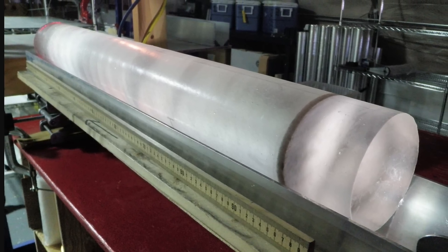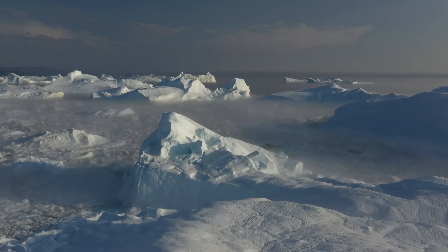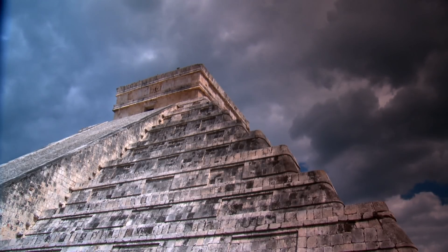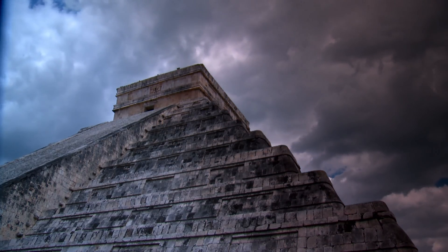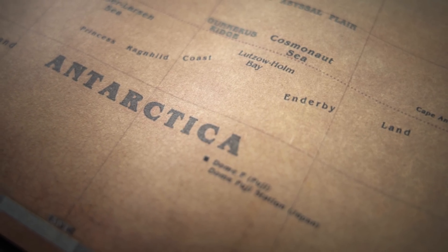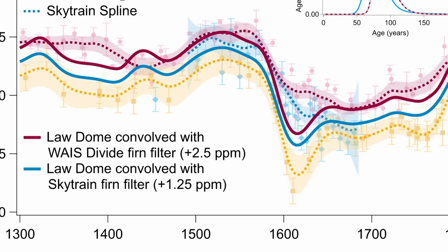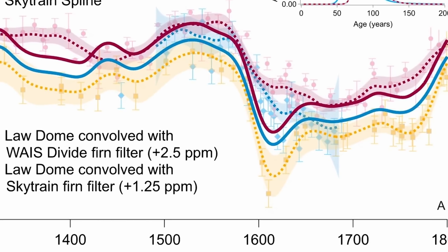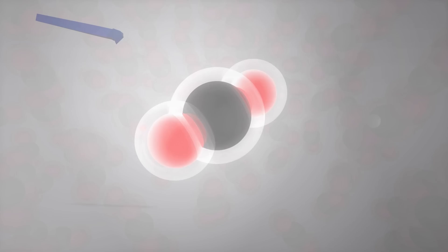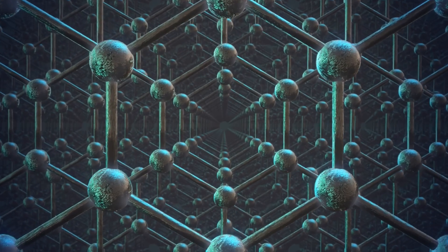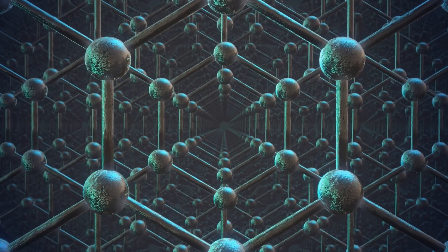CO2 levels definitely dropped, but it just wasn't clear by how much. In order to solve this, the researchers behind the recent study collected more ice samples from approximately 83 to 104 meters in depth, capturing the years 1454 to approximately 1688, from a different location — Skytrain Ice Rise, far away from the two other locations and presenting us with a third sample. The results once again confirmed that CO2 levels definitely dropped, very likely due to changes in human activities and a dramatic increase in land vegetation, but probably not as dramatic as the first sample showed. CO2 decreased by approximately 1 ppm every 20 years, dropping consistently for over 150 years, resulting in about 2.6 billion tons of CO2 absorbed every decade.